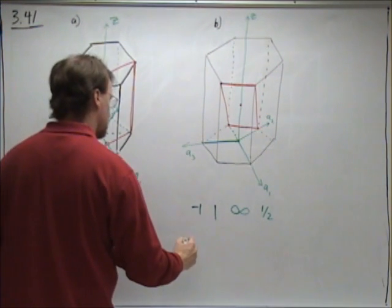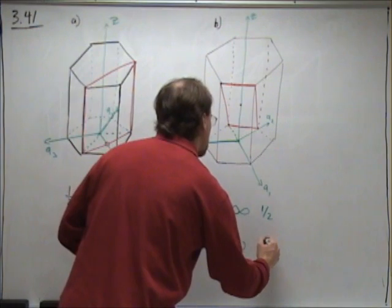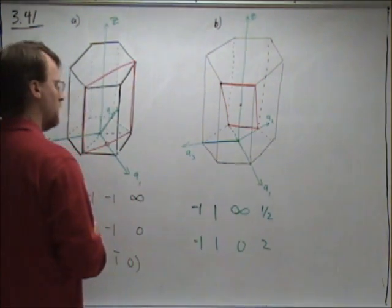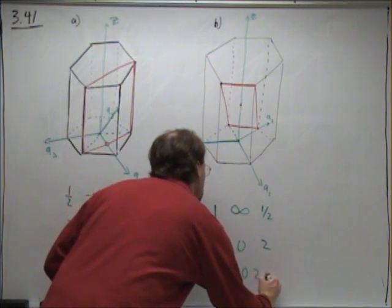We take the inverse of each of these. And we end up with 1 bar, 1, 0, 2.